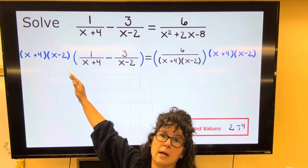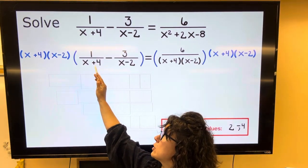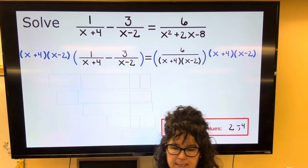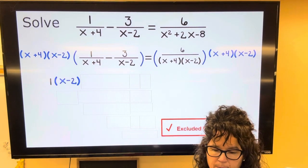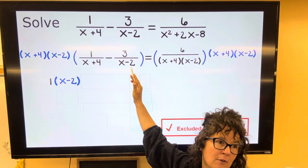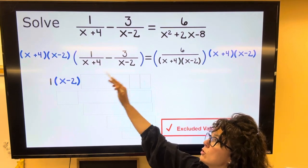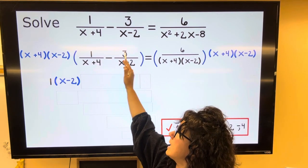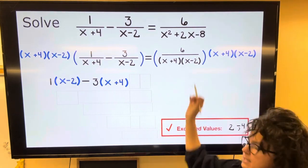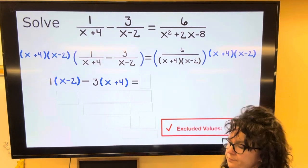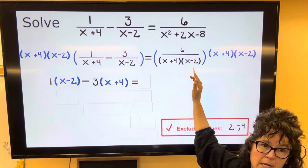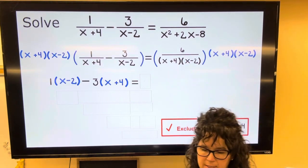When I multiply the blue times the first fraction, the x plus 4s cancel and I'm left with a 1 and an x minus 2. When I multiply the blue times the second fraction, the x minus 2s cancel and I'll be left with a negative 3 and an x plus 4. On the right side of the equal sign, the blue cancels out everything in the denominator. So all I have left is the number 6.